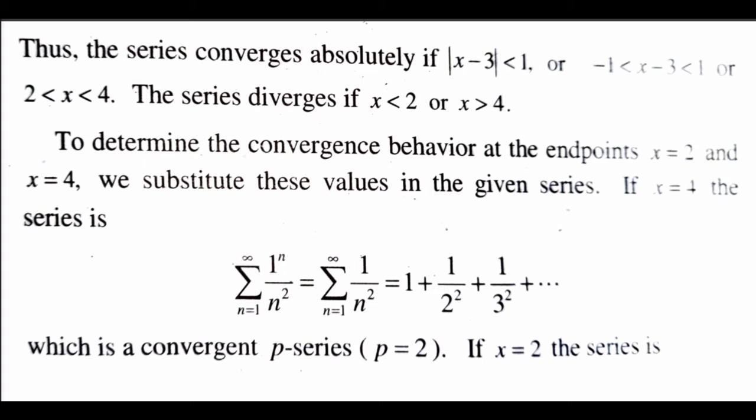Thus, the series converges absolutely if mod x minus 3 less than 1, or minus 1 less than x minus 3 less than plus 1, or 2 less than x less than 4. The series diverges if x less than 2 or x greater than 4.